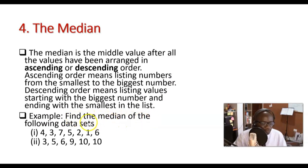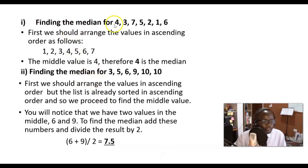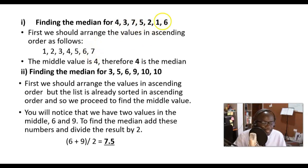Here is a simple example. Find the median of the following data sets. First list: 4, 3, 7, 5, 2, 1, 6. Step one: arrange the values in order. They are not currently in order, so we reorder them in ascending order starting from the smallest, giving us: 1, 2, 3, 4, 5, 6, 7. Now what is the middle value?